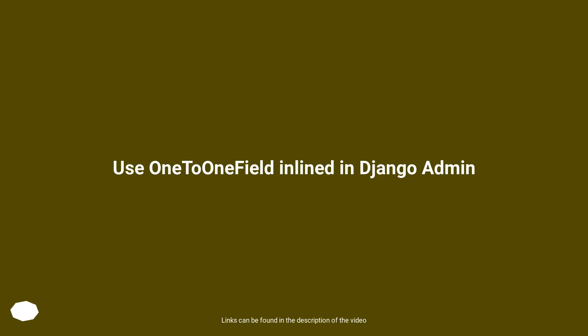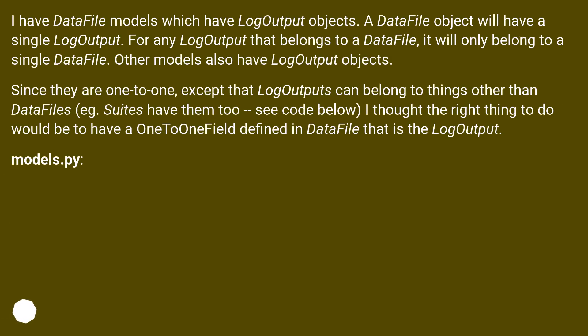Using a OneToOne field inlined in Django admin. I have DataFile models which have LogOutput objects. A DataFile object will have a single LogOutput. For any LogOutput that belongs to a DataFile, it will only belong to a single DataFile. Other models also have LogOutput objects.